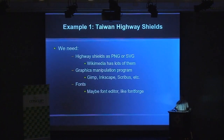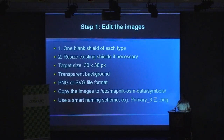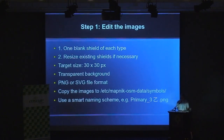To create the shields, we need one blank shield for every type — one for the freeway shield, one for expressways, one for primary highways, and so on — then resize them as necessary. The target size is around 30 by 30 pixels, though it doesn't need to be exactly that. Sometimes we need a wider shield for longer road numbers that don't fit in the regular shield.